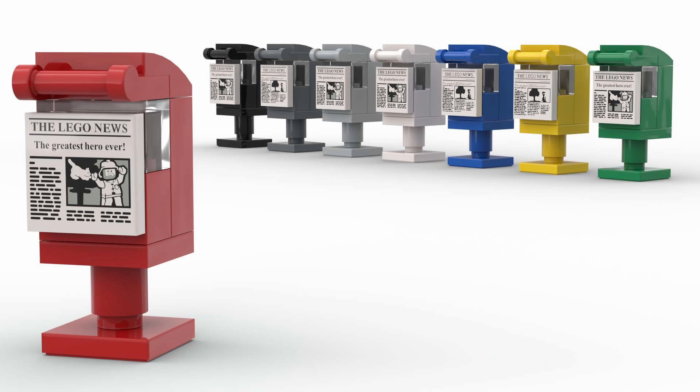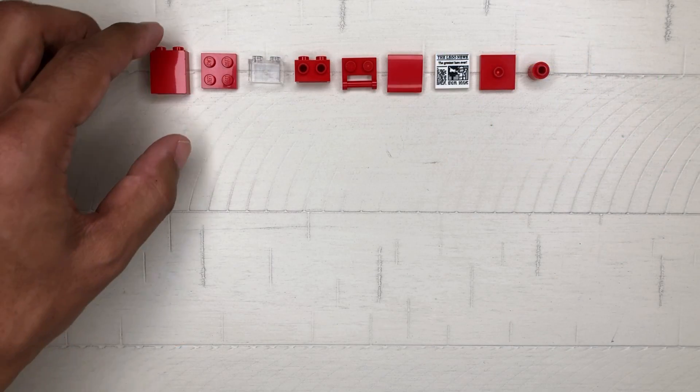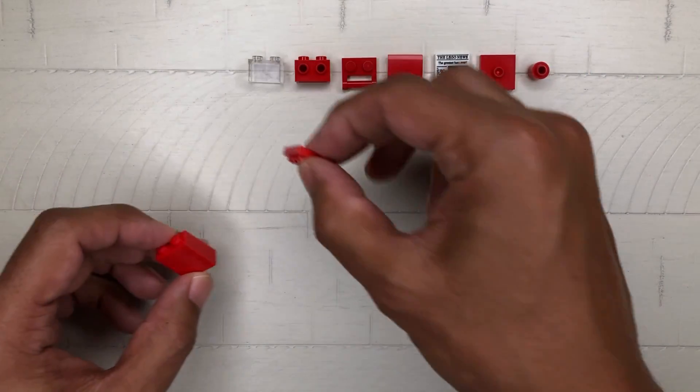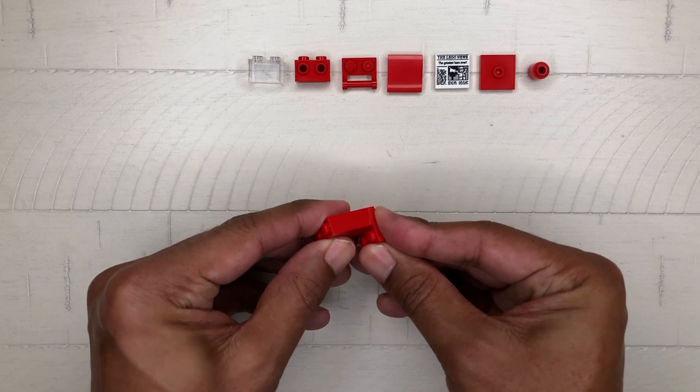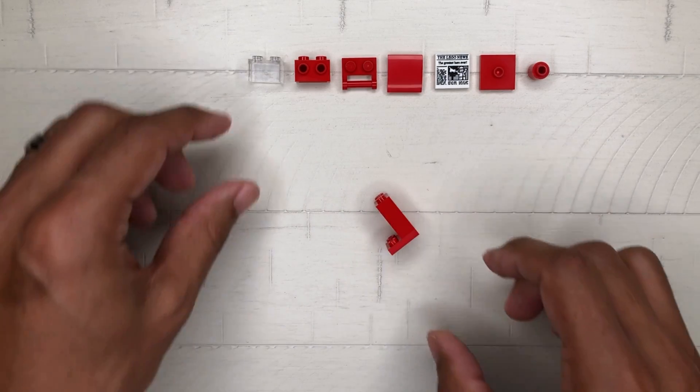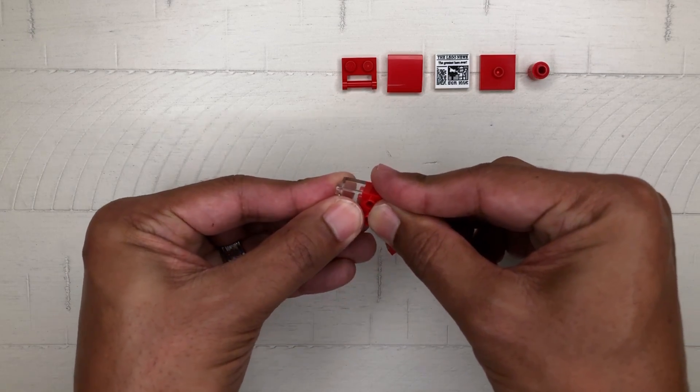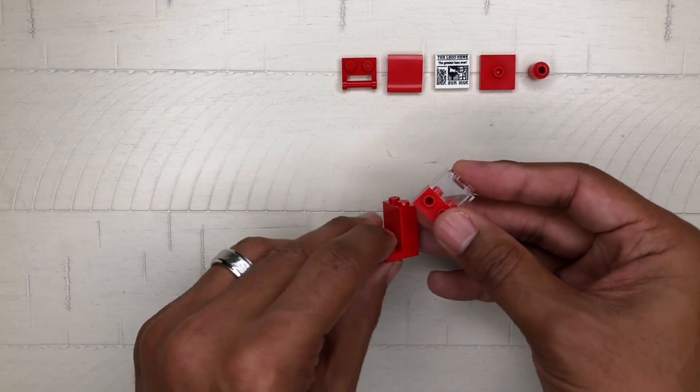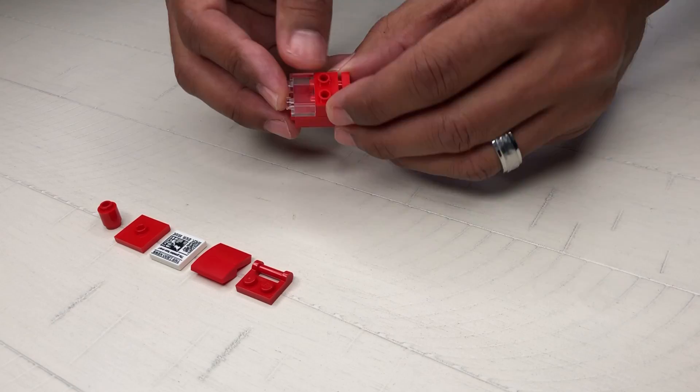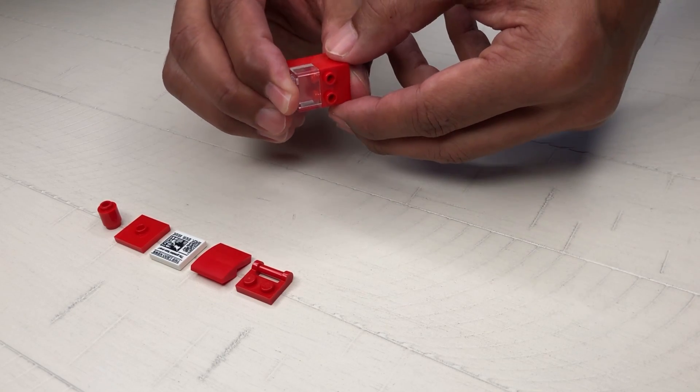Today we are building a Lego newspaper vending machine. Take this 1x2x2 brick and place that on top of this 2x2 plate. Take the translucent 1x2 brick and place that on top of the 1x2 modified brick with side studs. Now place that on the available space of the 2x2 plate from the previous step.